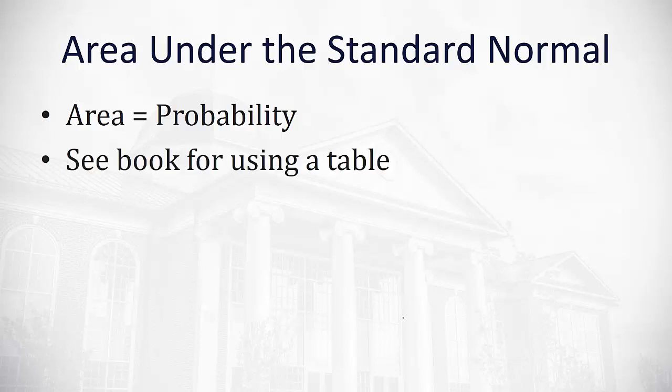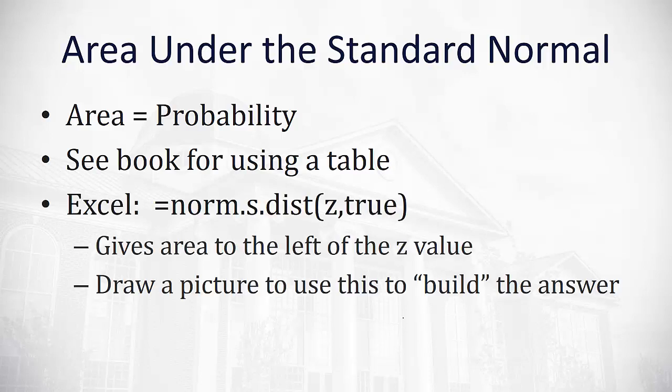Now once we have a z-score, we can figure out the area that corresponds with that z-score underneath the standard normal. And that's important because the area under the curve is the same thing as the probability that event will occur. Our textbook has some instructions for how to use a table to find the area under the curve, but we will use Excel in this video.